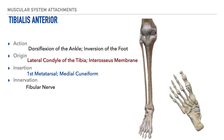The next muscle is called the tibialis anterior. Based on the name, we know this muscle is on the anterior aspect of the tibia. Its action is dorsiflexion of the ankle and inversion of the foot. Its origin is on the lateral condyle of the tibia and the interosseous membrane joining the tibia and fibula. Its insertion is on the plantar aspect of the foot, specifically the first metatarsal and medial cuneiform, and its innervation is from the fibular nerve.